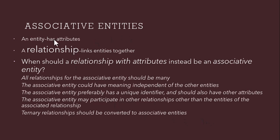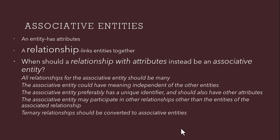An entity set has attributes and a relationship links entities together. When should there be a relationship with an attribute instead? These are a few properties of associative entities. All relationships for an associative entity should be many — this is the first characteristic. Only an associative entity could have meaning independent of other entities. An associative entity preferably has a unique identifier and should also have other attributes. The associative entity may participate in other relationships, and internal relationships should be converted to associative entities.